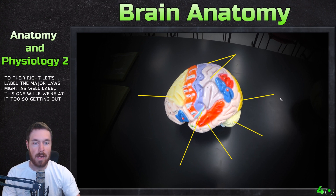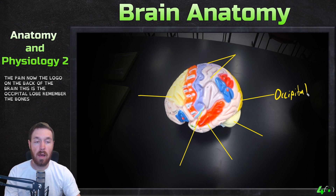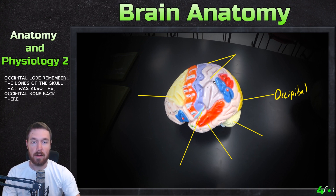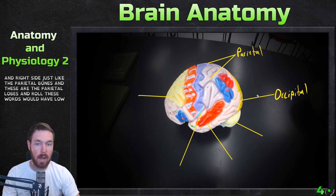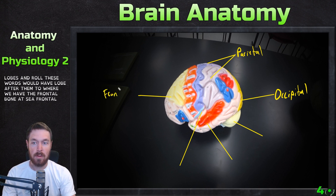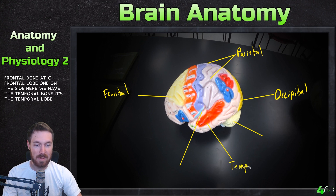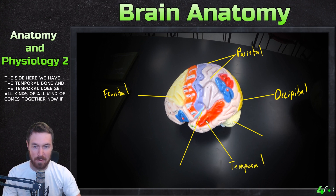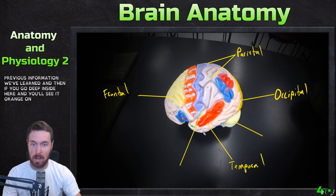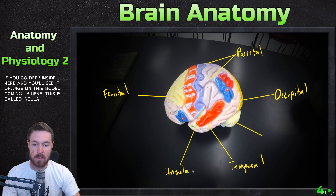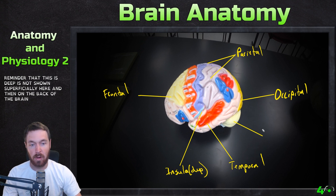Let's label the major lobes. The lobe on the back of the brain is the occipital lobe — just like the occipital bone in the skull. On the left and right side, just like the parietal bones, these are the parietal lobes. Where we have the frontal bone, that's the frontal lobe. On the side we have the temporal bone and correspondingly the temporal lobe. Deep inside — shown in orange on this model — is the insula, noted here in parentheses as it's not shown superficially. On the back of the brain is the small structure called the cerebellum.